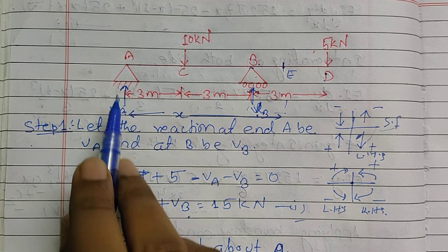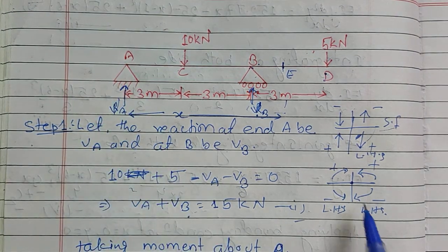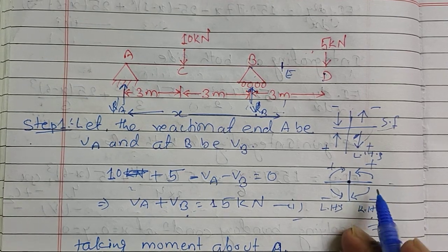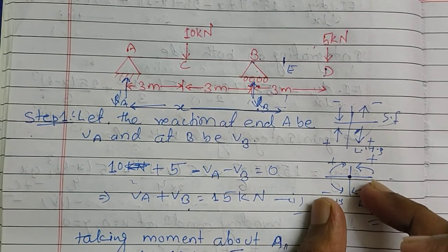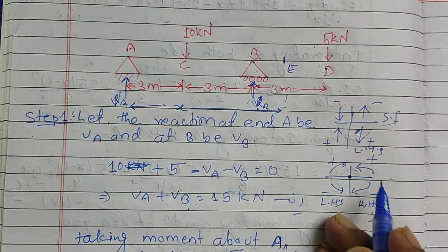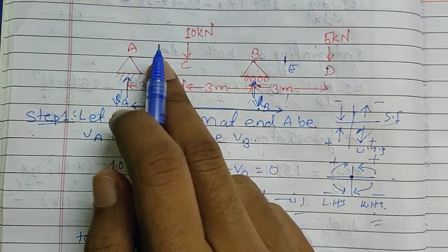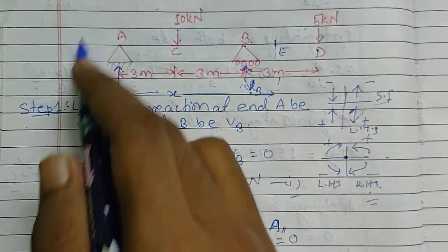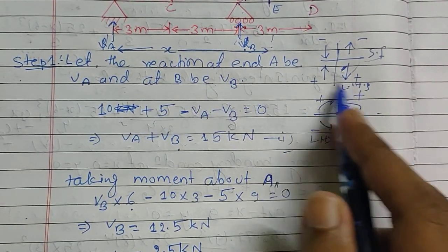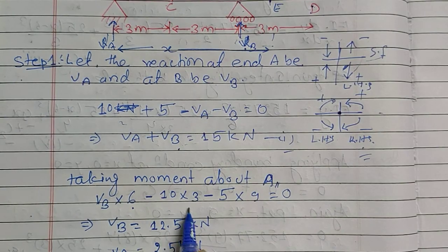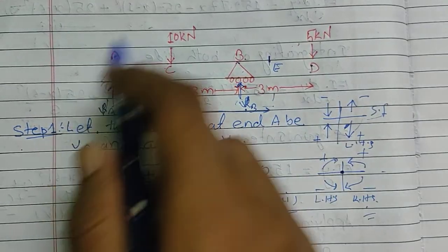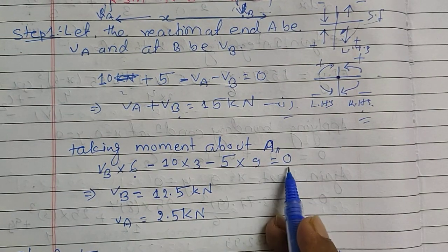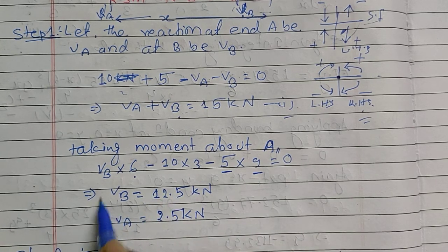In step two, I find the moment about point A. Reaction VB acts upward, creating an anti-clockwise moment, which is positive: VB × 6. The 10 kN load creates a clockwise moment, which is negative: −10 × 3. The 5 kN load also creates a clockwise moment: −5 × 9. Solving this gives VB = 12.5 kN.